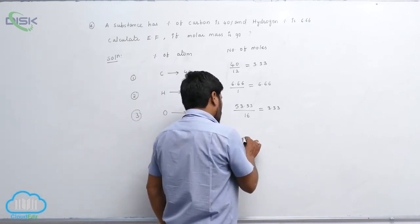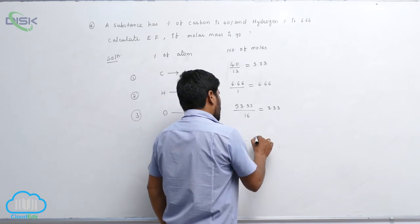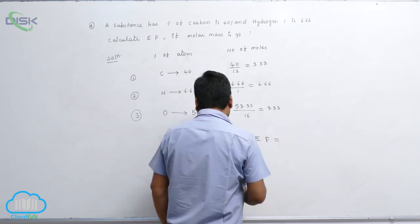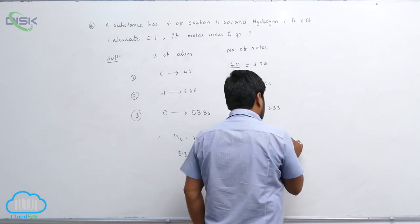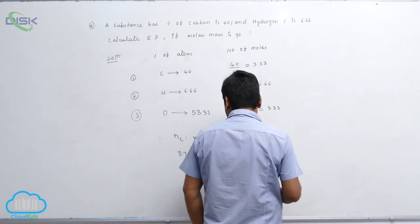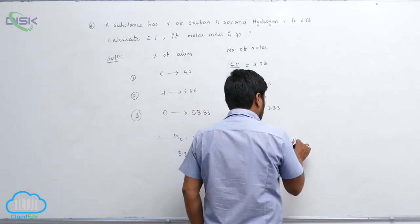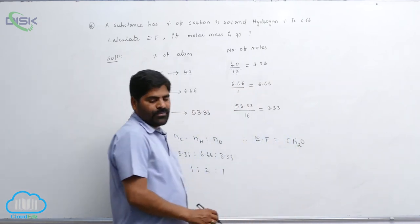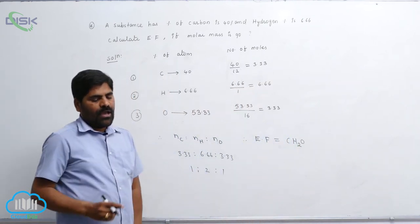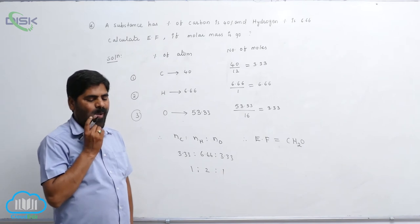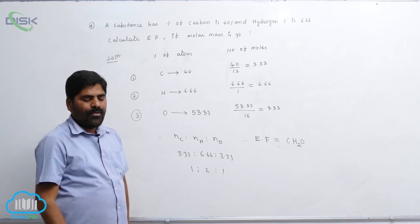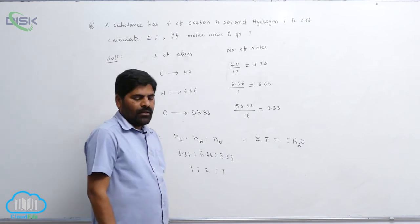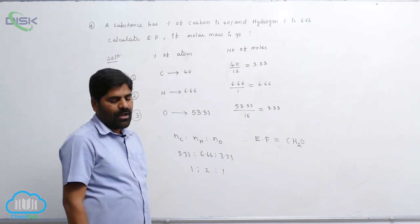Therefore, the empirical formula is CH₂O. Carbon has 1 atom, hydrogen has 2 atoms, and oxygen has 1 atom. This is the empirical formula.